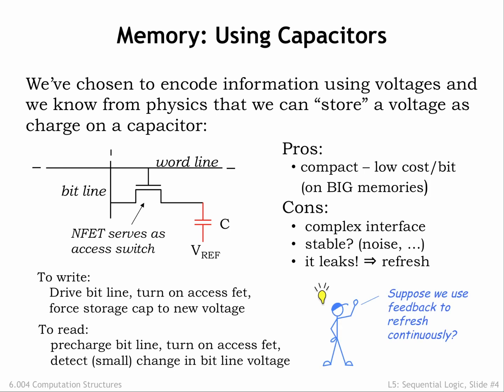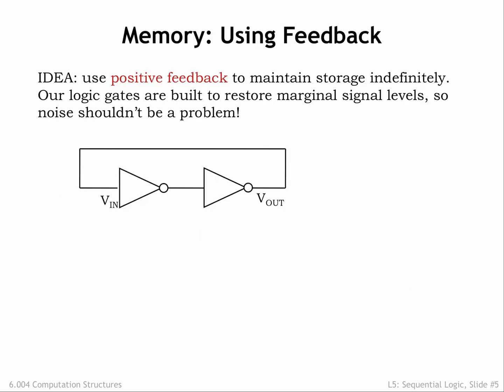Maybe we can get around the drawbacks of capacitive storage by designing a circuit that uses feedback to provide a continual refresh of the stored information. Here's a circuit using combinational inverters hooked in a positive feedback loop. If we set the input of one of the inverters to a digital 0, it will produce a digital 1 on its output. The second inverter will then produce a digital 0 on its output, which is connected back around to the original input. This is a stable system and these digital values will be maintained even in the presence of noise, as long as the circuitry is connected to power and ground. It's also stable if we flip the digital values on the two wires. The result is a system that has two stable configurations, called a bistable storage element.